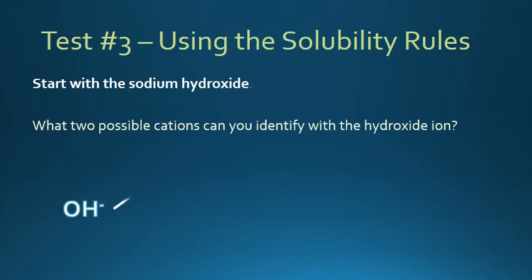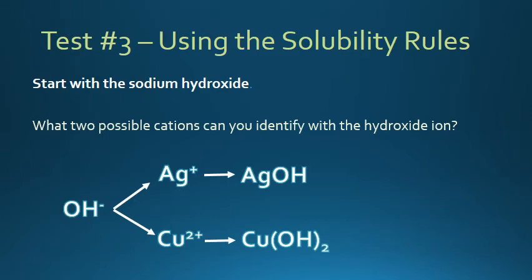If we take the hydroxide ion and we mix it with all of our remaining solutions, we know that silver will give us a precipitate. And we know that copper will also give a precipitate. So when you mix sodium hydroxide with all of your remaining solutions, you will make two precipitates.